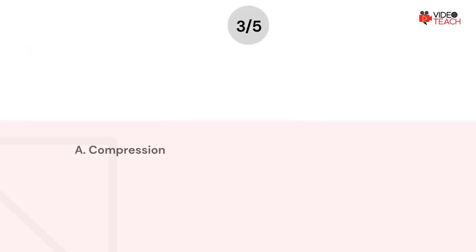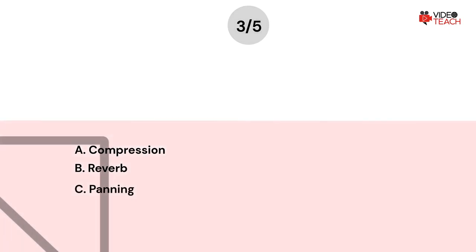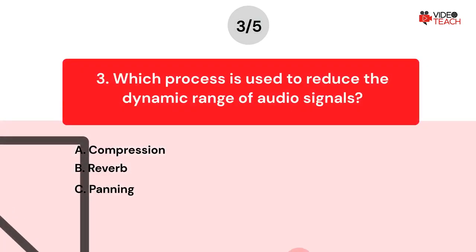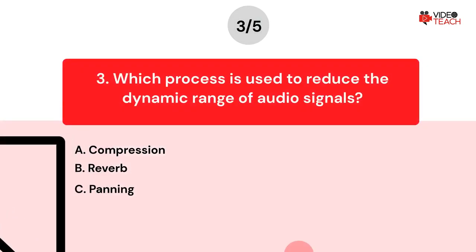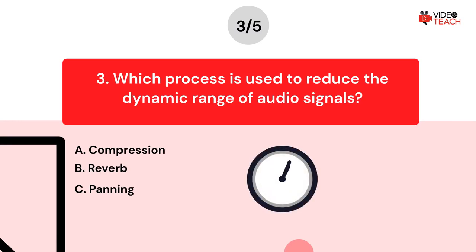Question number three. Which process is used to reduce the dynamic range of audio signals? Option A: Compression. Option B: Reverb. Option C: Panning. Now you have about 15 seconds to think about your answer.